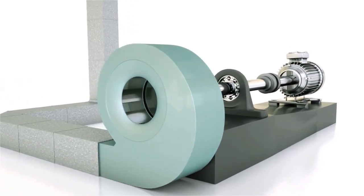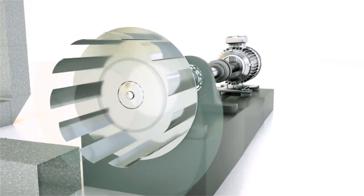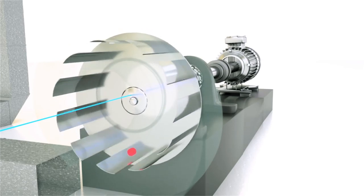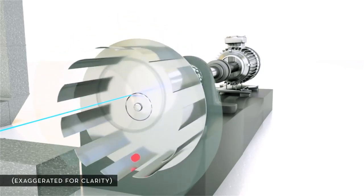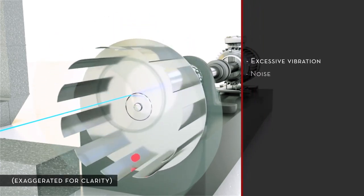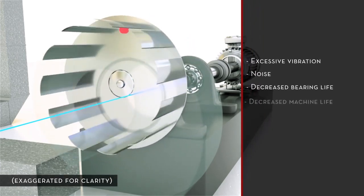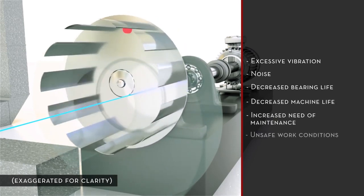Rotational unbalance occurs when there is an uneven distribution of mass around an axis of rotation. It can give a rotating machine element eccentric movement, which can cause excessive vibration, noise, decreased bearing life, decreased machine life, increased need of maintenance, and unsafe work conditions.